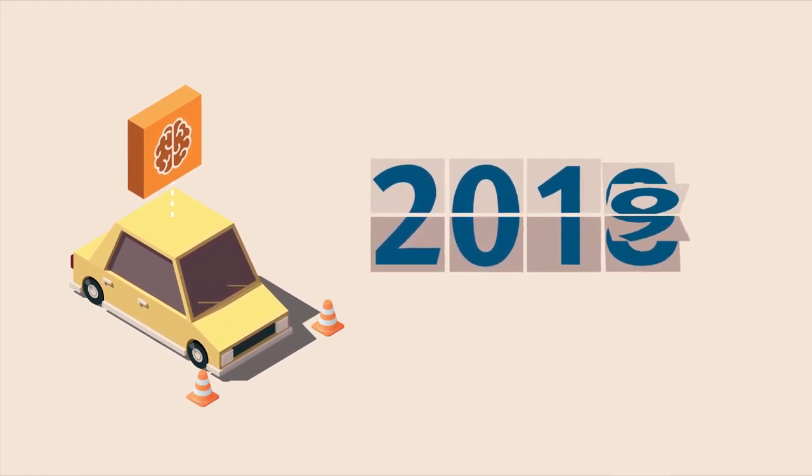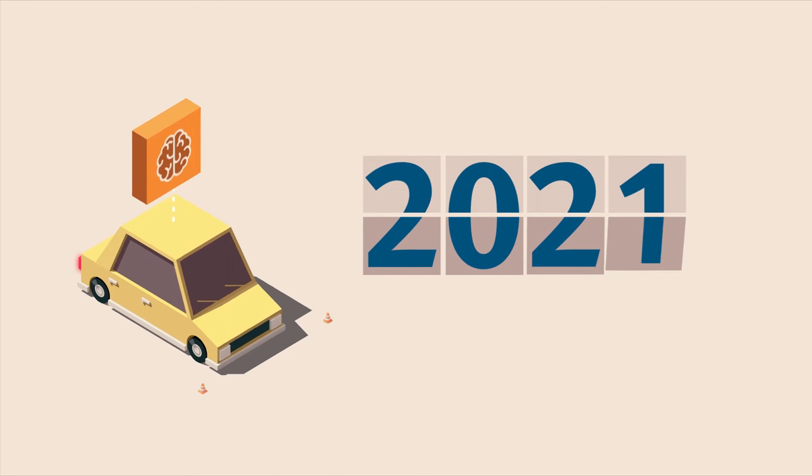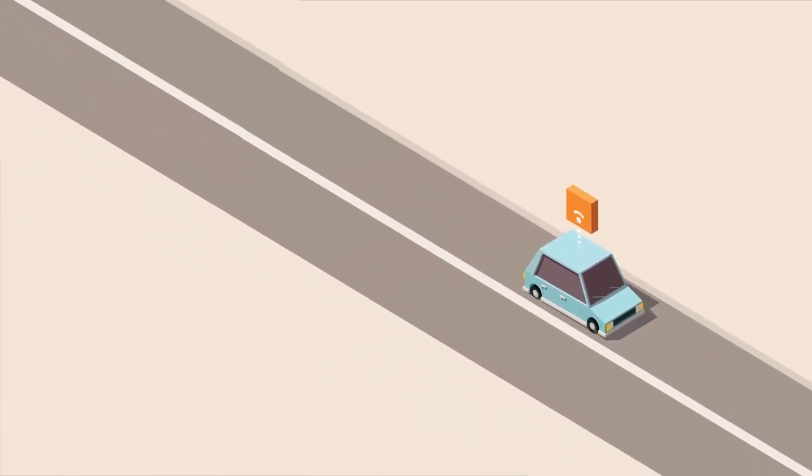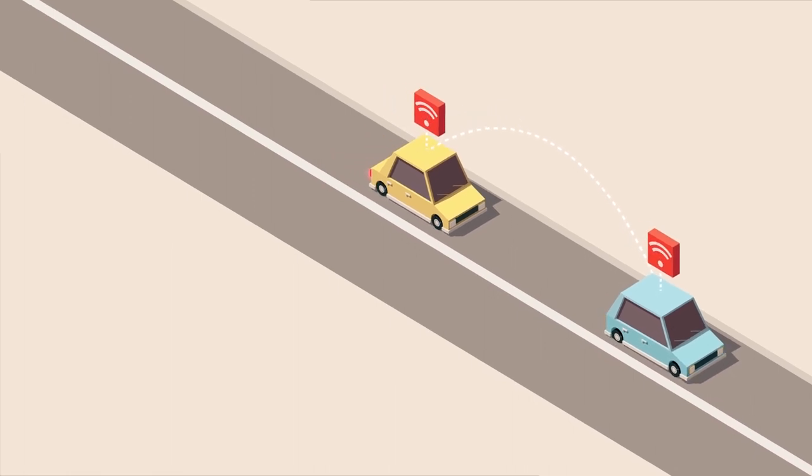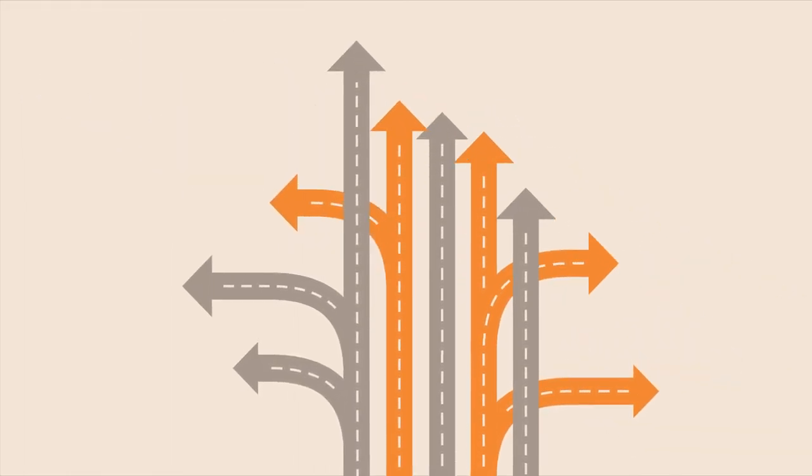Although we can't guarantee when these vehicles will be available to buy, we do need to know how they will work and how they will interact with other road users on our roads. So vehicles with autonomous capabilities will be tested on both government and council controlled roads.